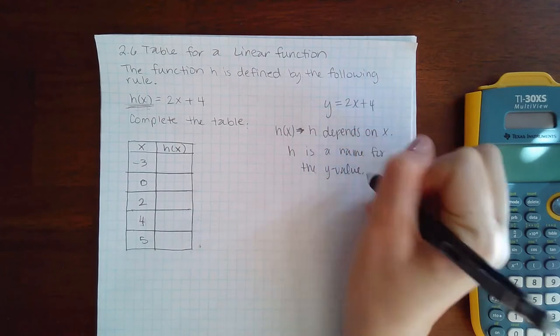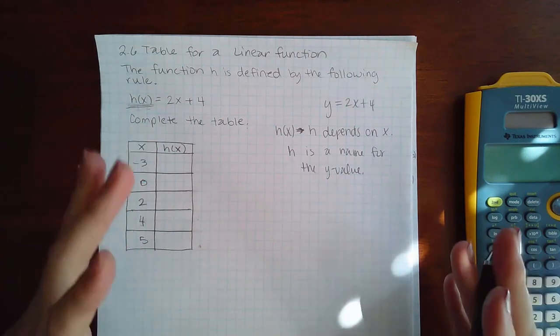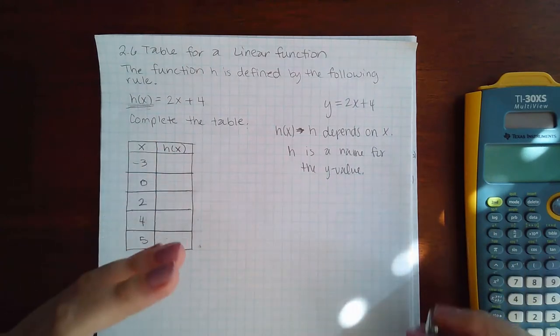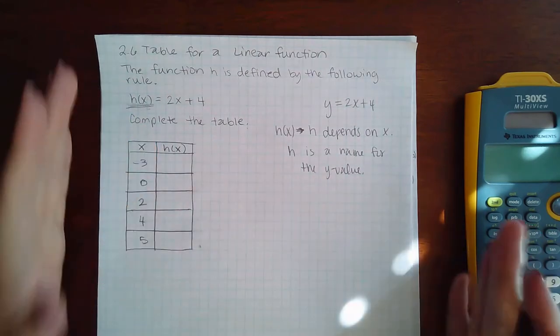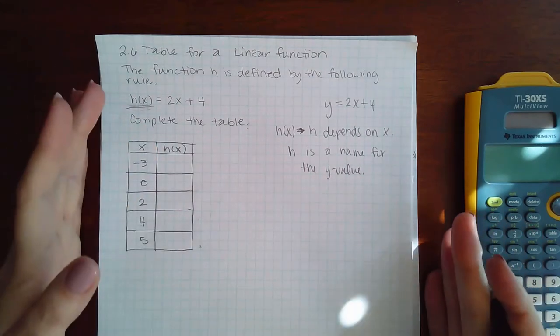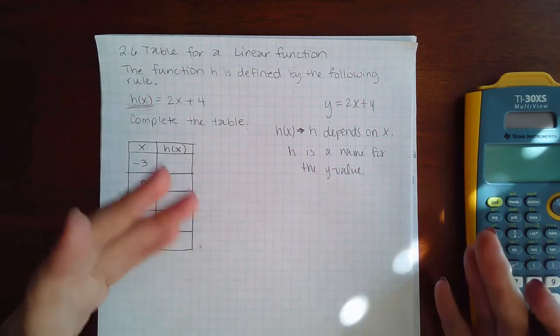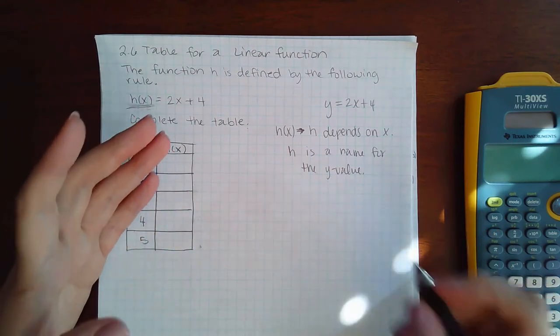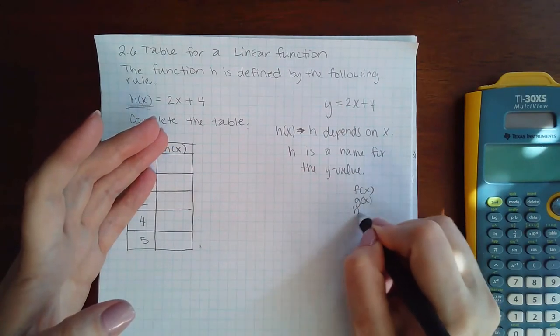And that's important because if I'm talking about five different lines on one single graph, you can't call them all y. Y equals this, y equals that, y equals this, because that won't help you to label and it won't help you to distinguish which one's which. So we have to have names for them. And so typically you'll see things like f of x and g of x and h of x.